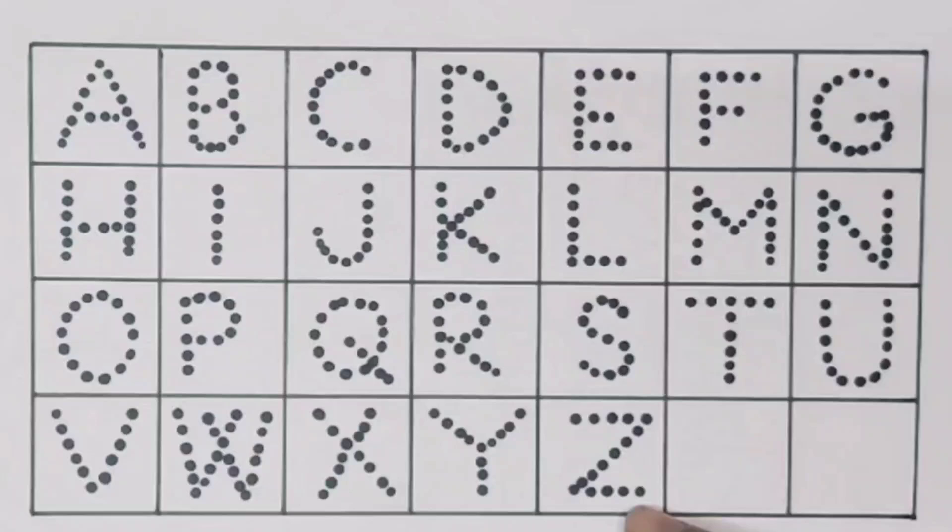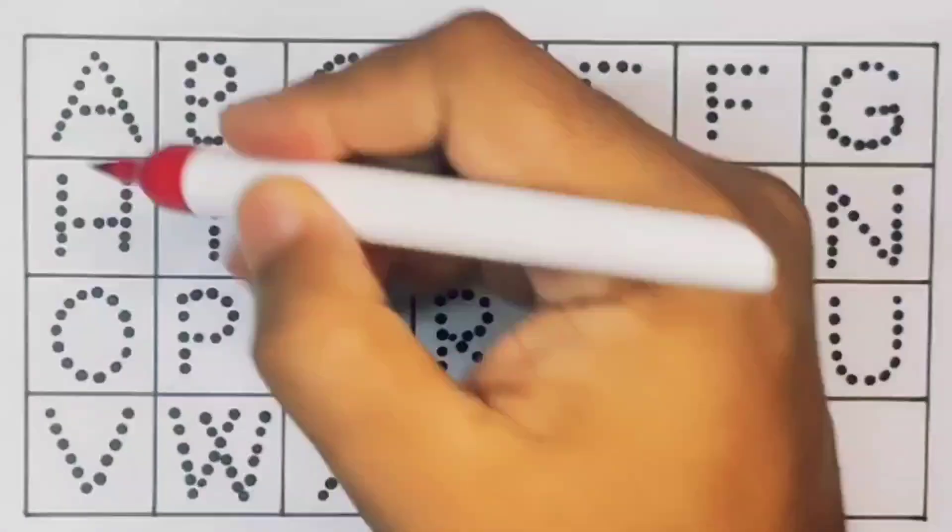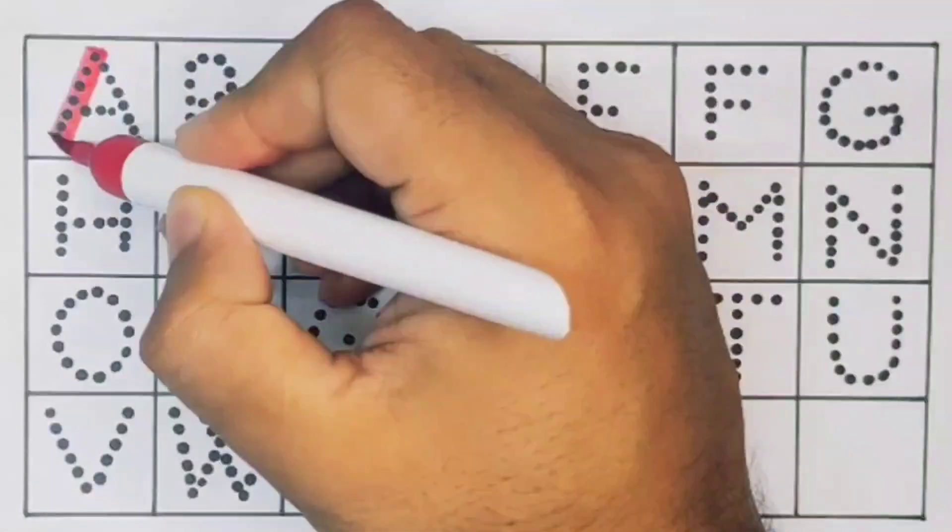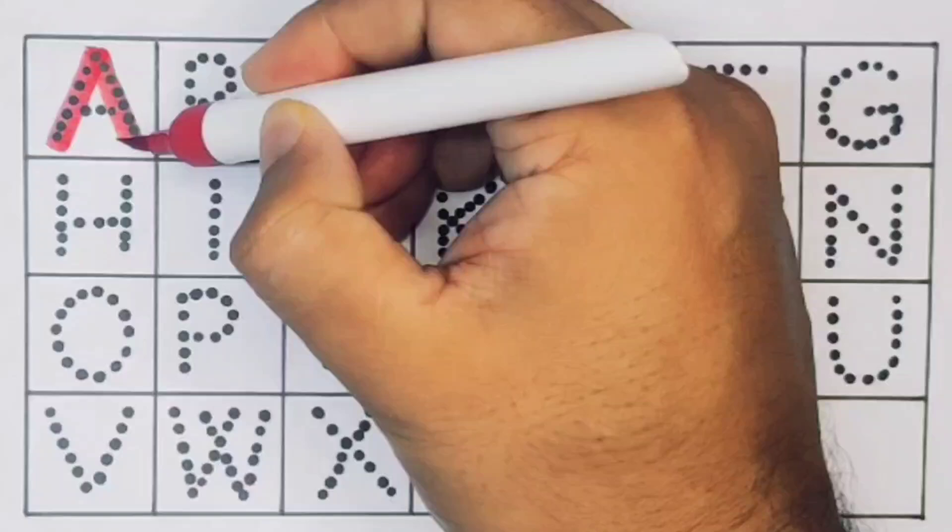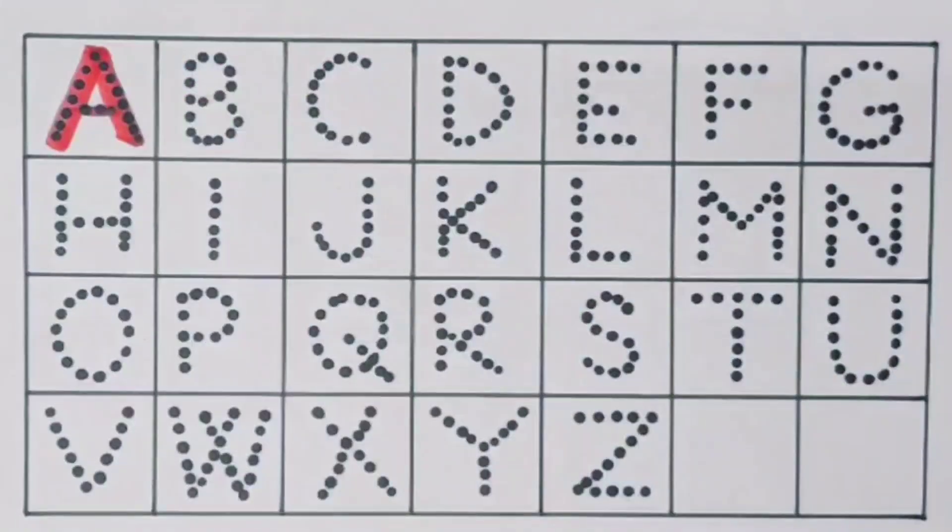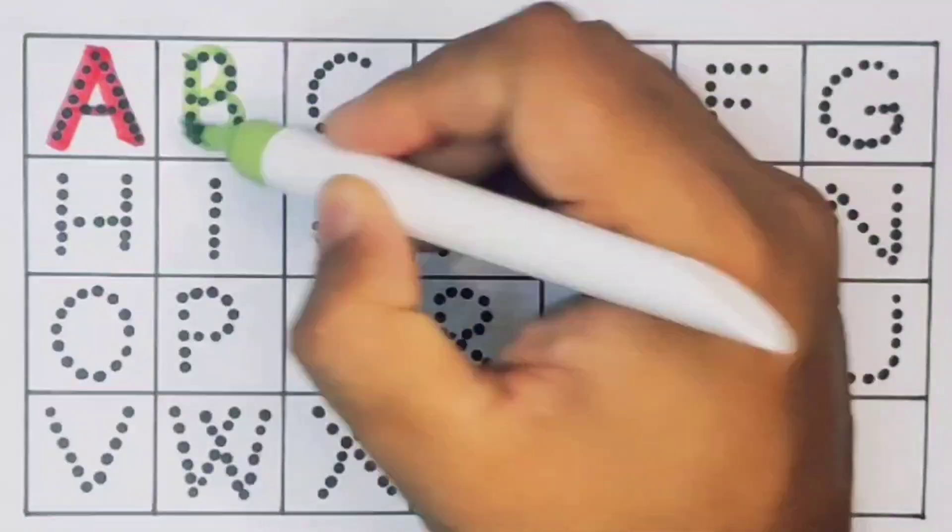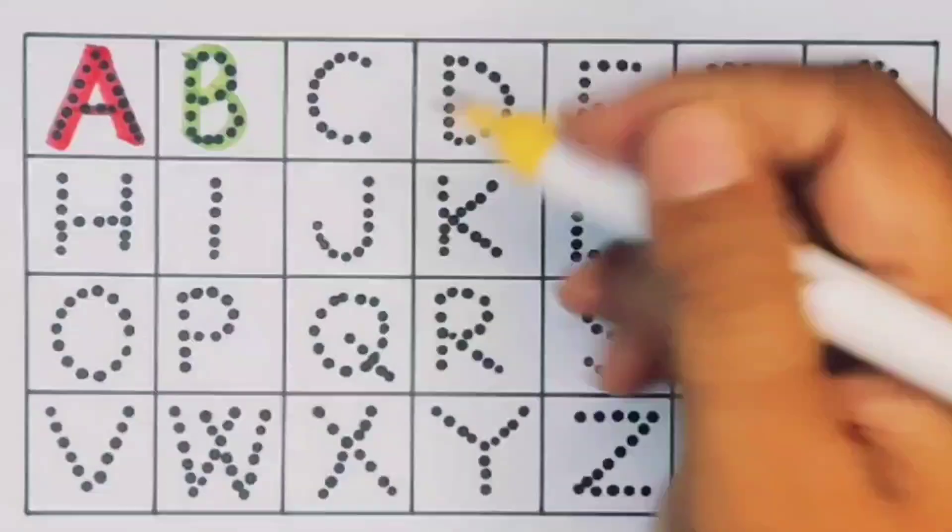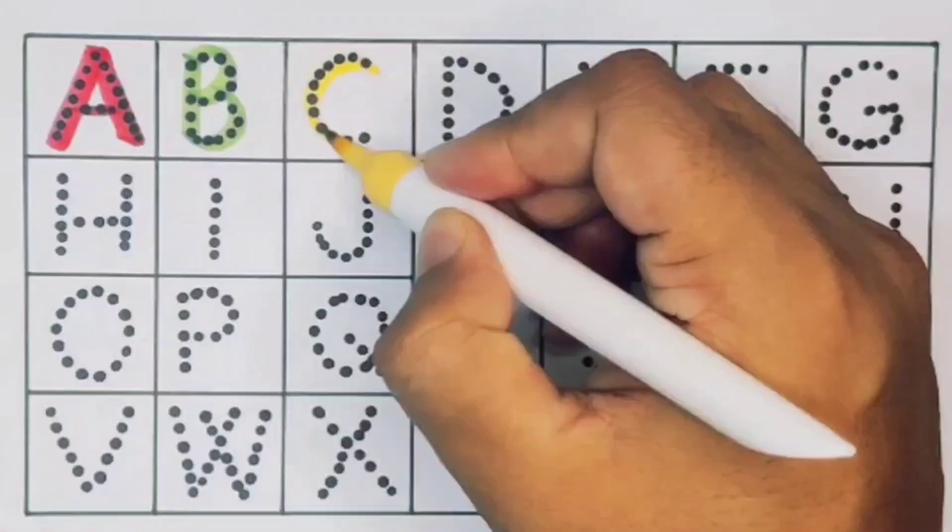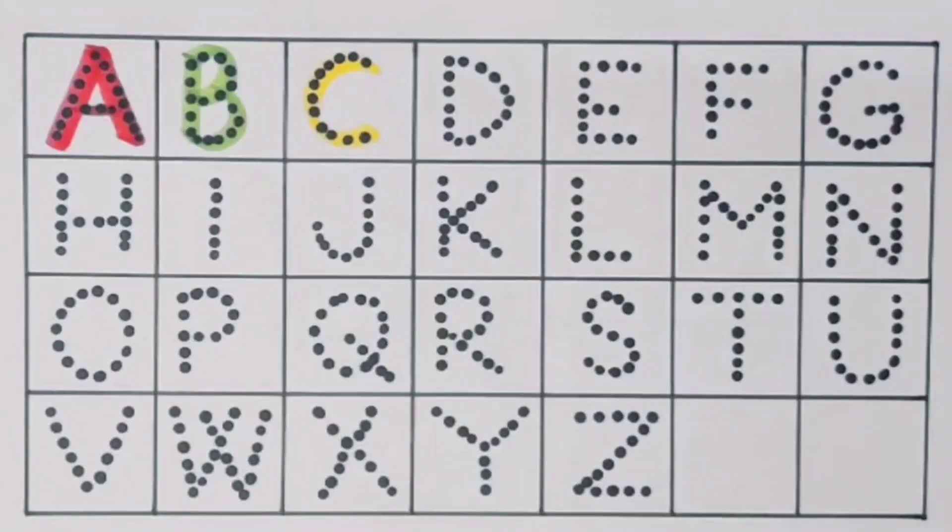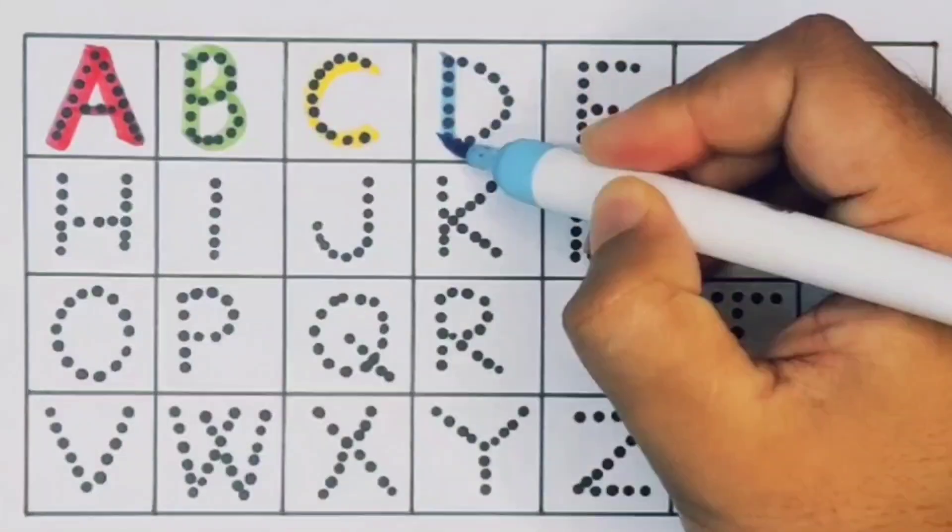First, A. A for aeroplane. Next, B. B for butterfly. Next, C. C for caterpillar. Next, D. D for doctor.